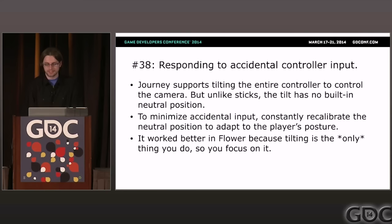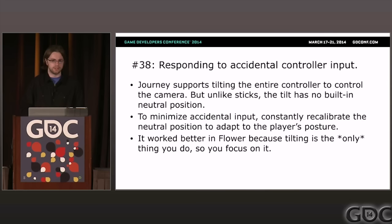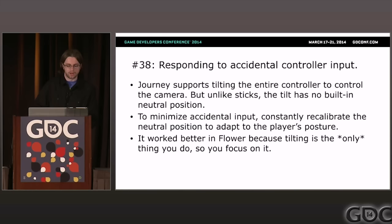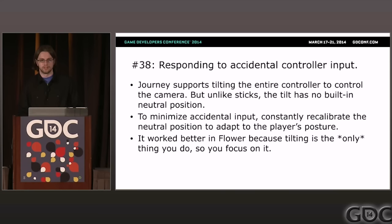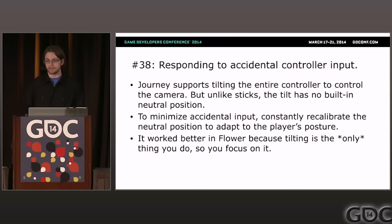Problem thirty-eight: responding to accidental controller input. In Journey, we support two different inputs for controlling the camera: the analog stick, and the gyroscope/orientation of the PS3 controller. This is partly left over from Flower, where you control the game by tilting the controller. Honestly, it made a lot more sense in Flower because it's the only thing you do in that game. In Journey it's more of a pat-your-head-and-rub-your-belly problem, and people often tilt the controller accidentally making the camera swing around. At the very least, we probably should have had an option to disable it.